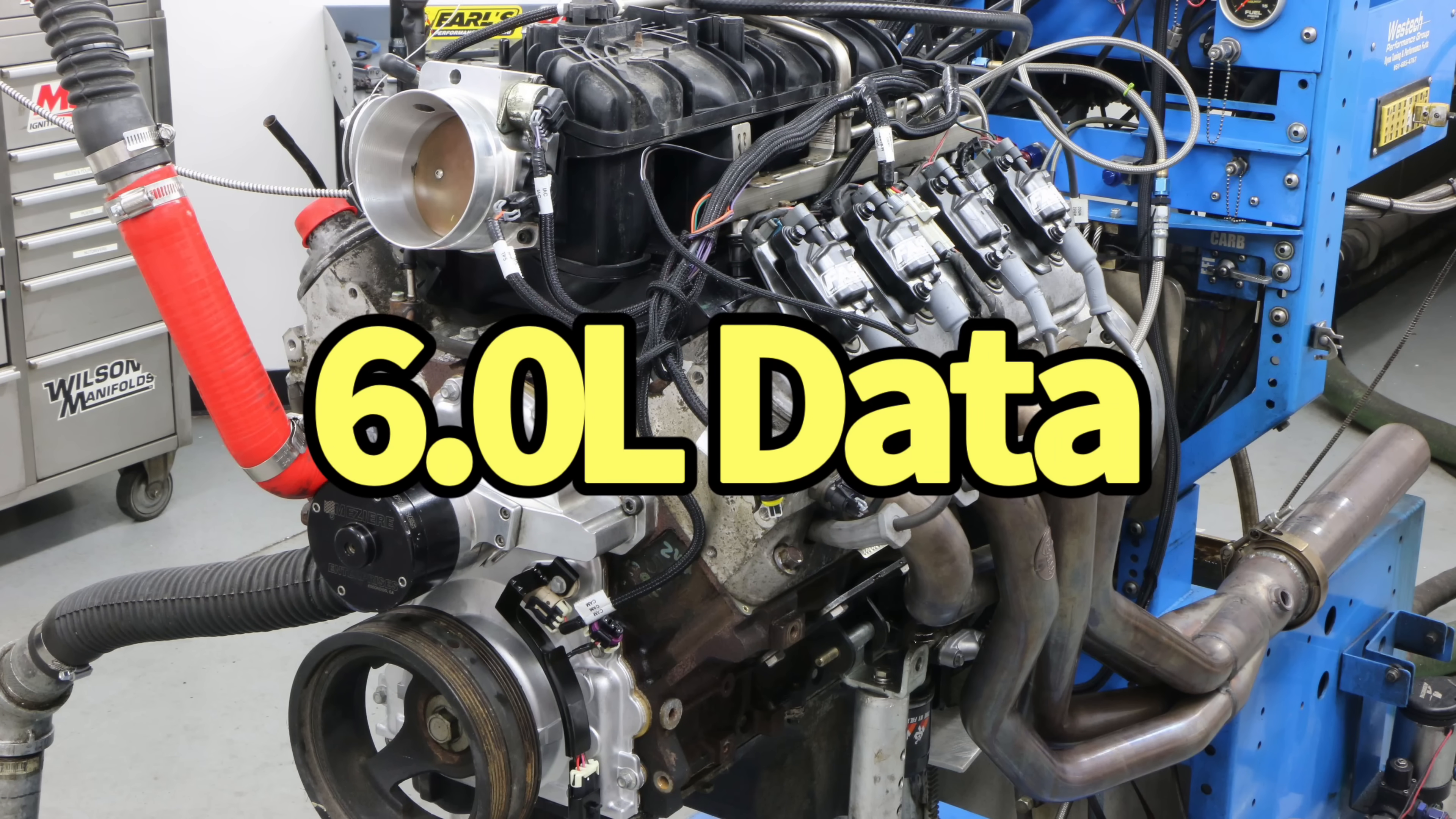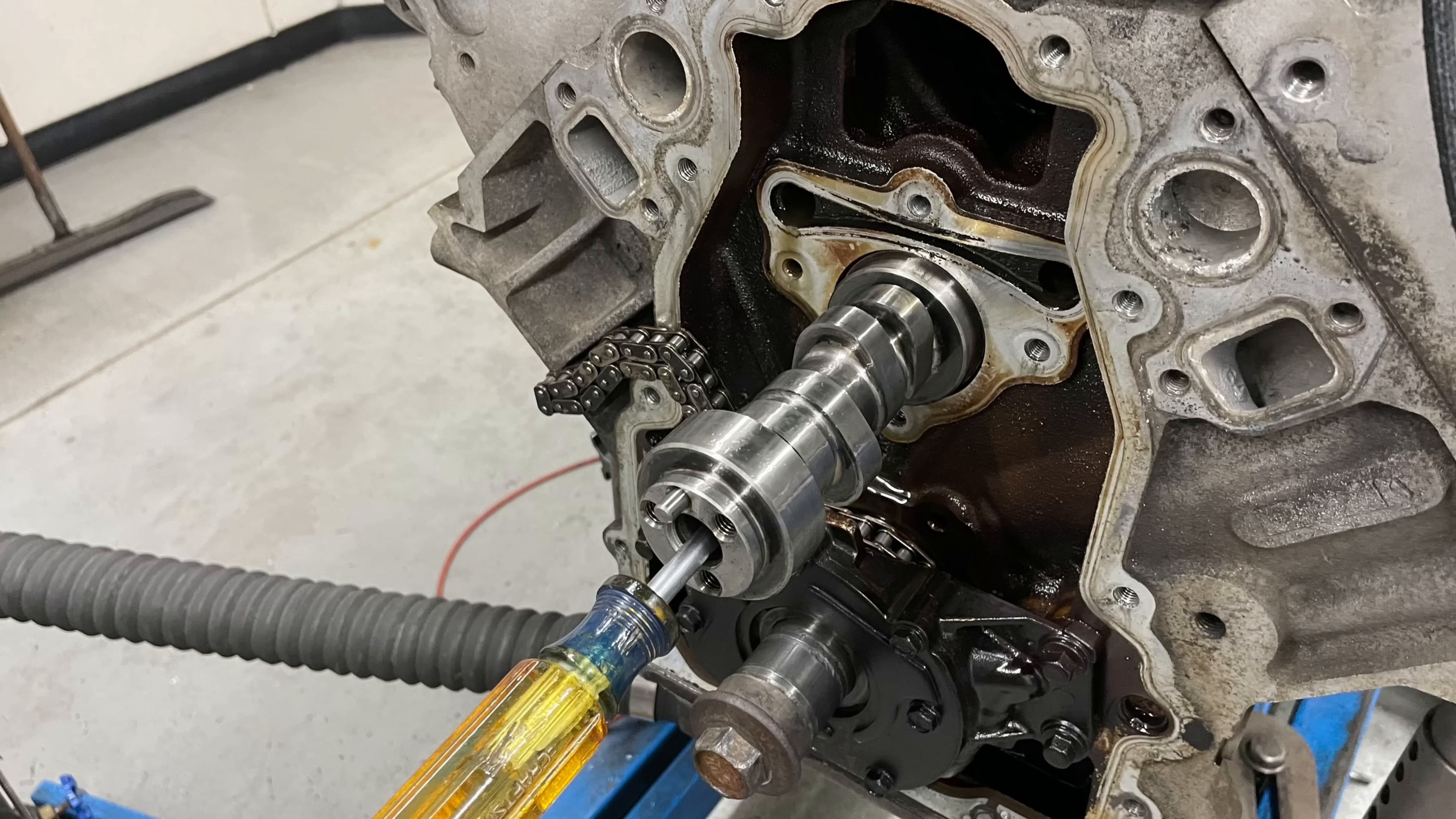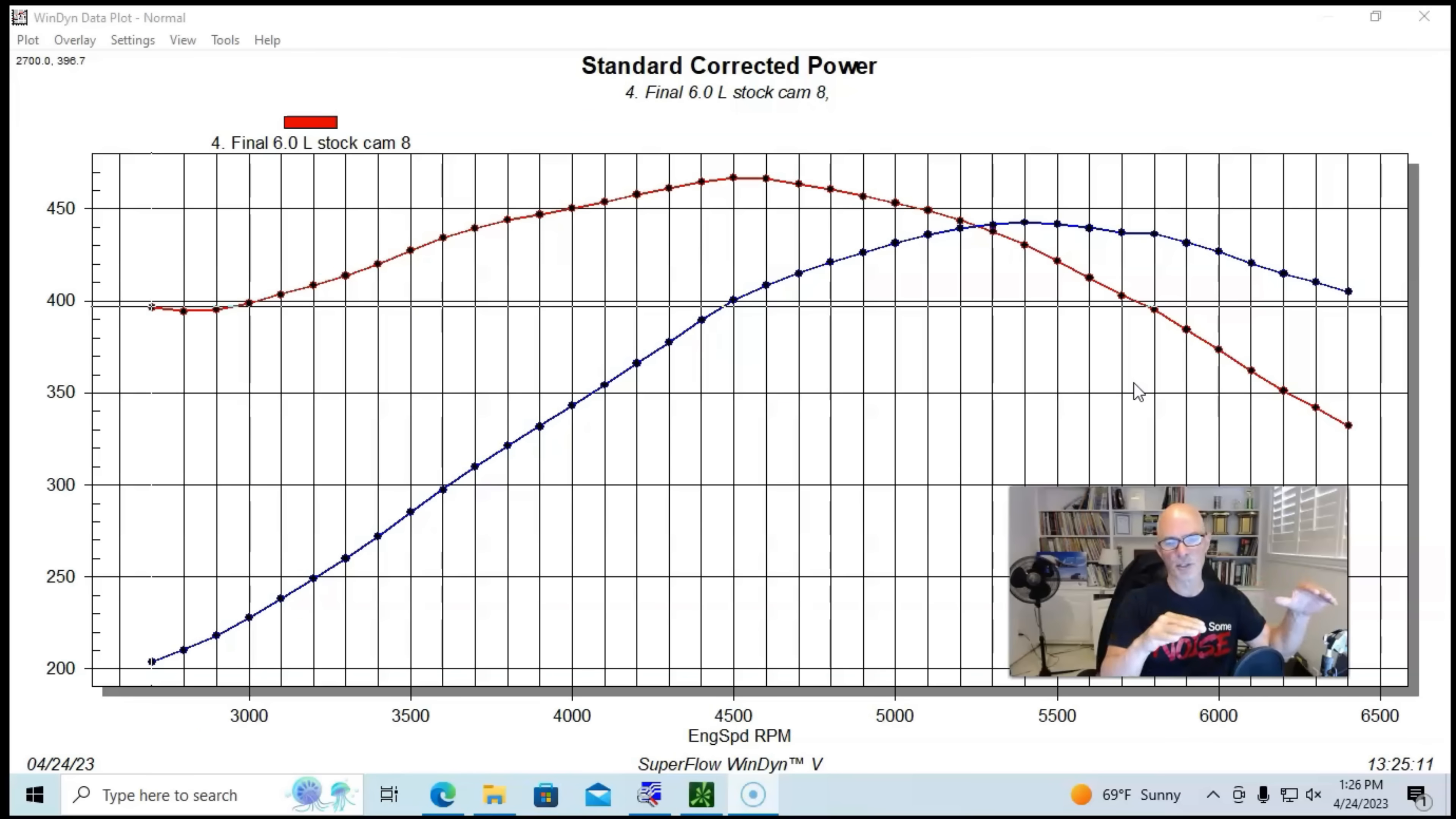Okay guys, now we know what the Stock cam and the Truck Norse cam and the Sloppy Stage 2 cam did on the L33 5.3 liter. Let's find out what the Stock cam and Sloppy Stage 2 did on the 6 liter, and there's obviously a change here, and it doesn't really matter for what we're doing, but the cam that we used in the 6 liter is not the same cam that we used in the 5.3 liter.